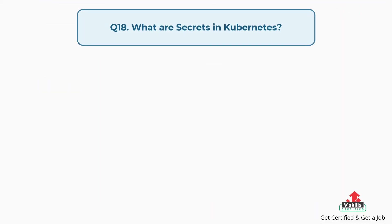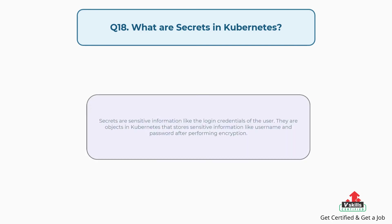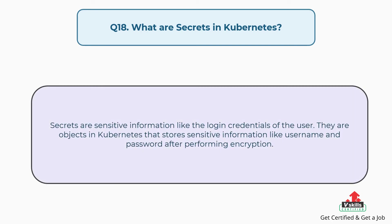Question number eighteen: What are secrets in Kubernetes? Secrets are sensitive information like the login credentials of the user. They are objects in Kubernetes that store sensitive information like username and password after performing encryption.